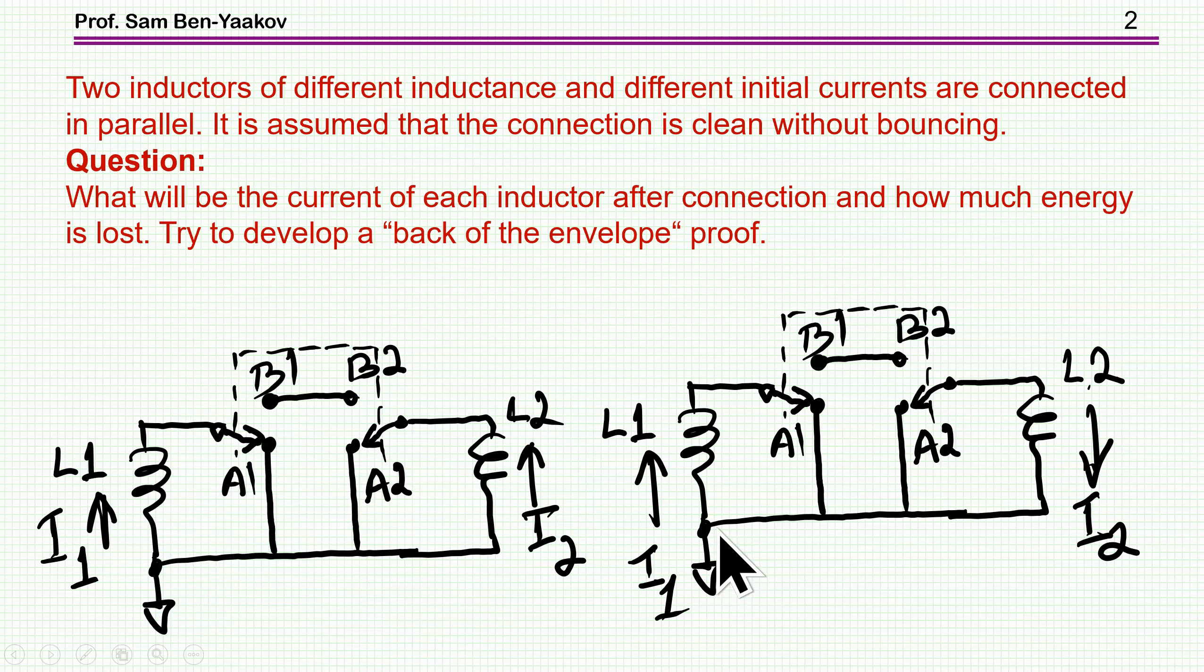Then we have another case, which is similar, except that the currents are in opposite direction. In fact, they are following the same direction, I1 and I2, and again, we are connecting these two together. And the question was, what would be the current of each inductor after connection, and how much energy is lost? And I've also suggested to try to develop a back-of-the-envelope proof, rather than to go through an elaborate derivation.